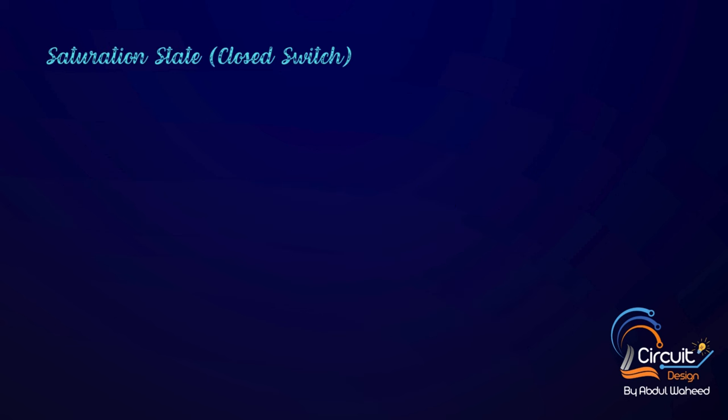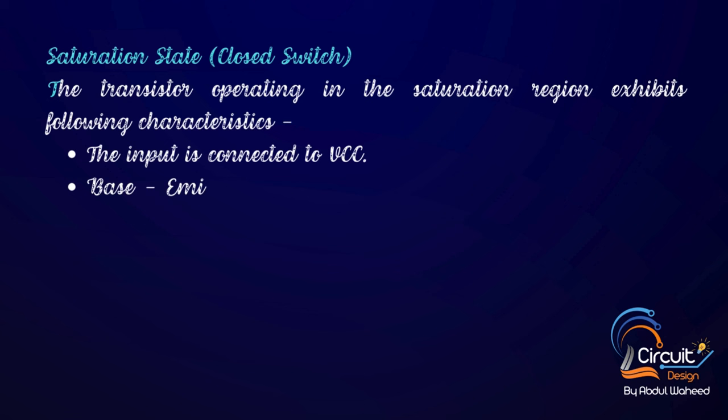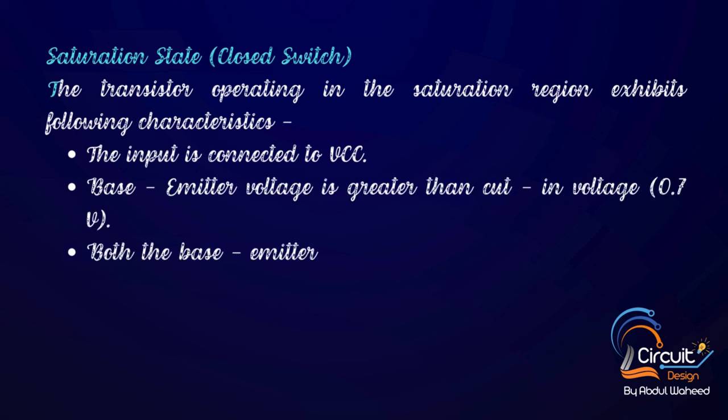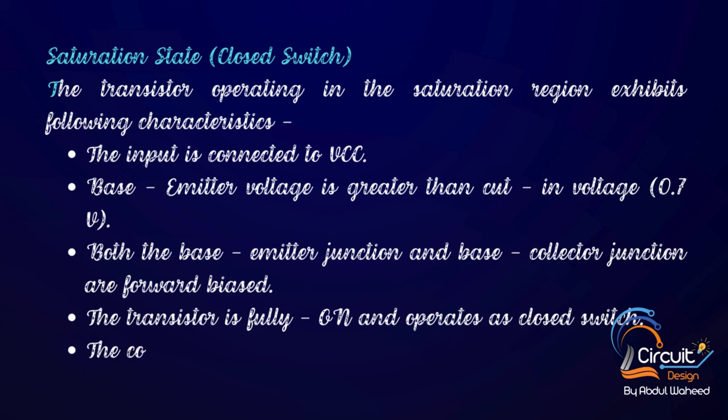Saturation state closed switch. The transistor operating in the saturation region exhibits following characteristics. The input is connected to Vcc. Base emitter voltage is greater than cut-in voltage 0.7V. Both the base emitter junction and base collector junction are forward biased. The transistor is fully on and operates as closed switch. The collector current is maximum, Vout equals 0 volt.